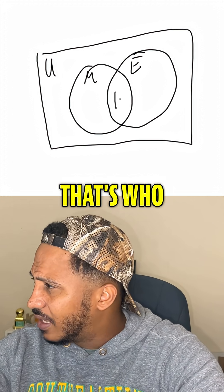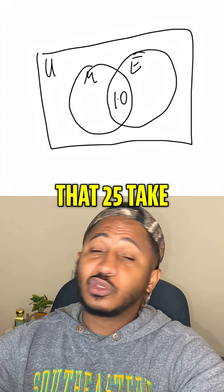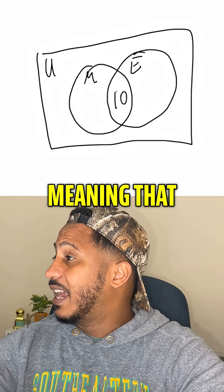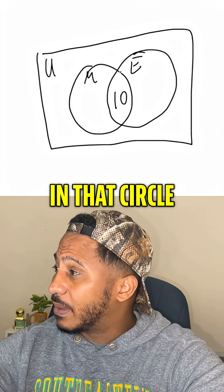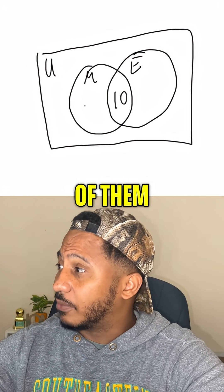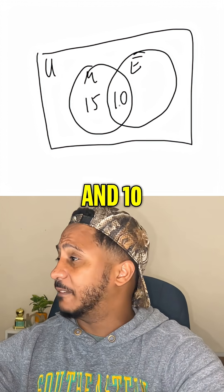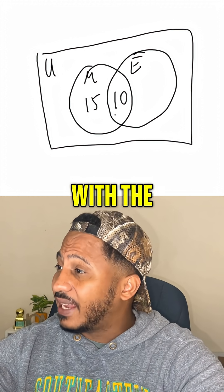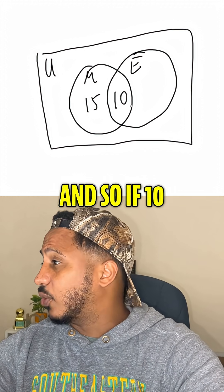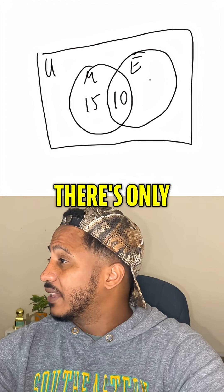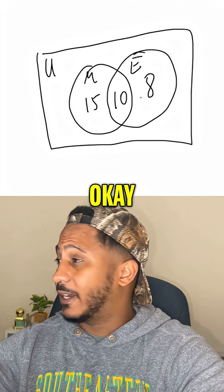So we know 10 goes in the middle — that's who takes both. We know that 25 take math altogether, meaning if there are 25 altogether in the math circle and 10 of them are in the middle, then this would have to be 15 — the difference of 25 and 10. Same thing with English: we know 18 take English, and if 10 of them take both, then there are only 8 that take just English.